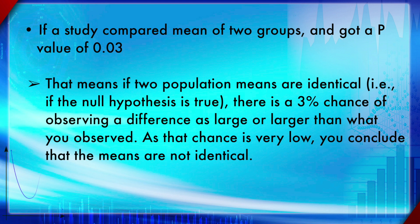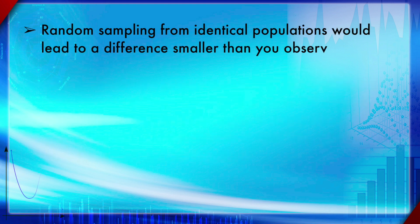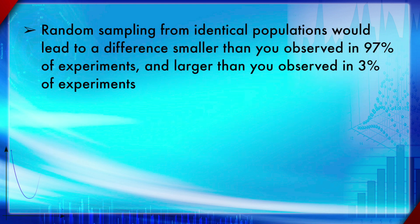Since the p-value is quite low at 0.03, meaning only 3%, the chances of that difference occurring by randomness or chance alone are not that high. You conclude the groups might have very different means, because 0.03 is less than the threshold p-value of 0.05. Random sampling from identical populations would lead to a difference smaller than observed in 97% of experiments and larger than observed in only 3% of experiments — that is another way to interpret the same p-value.